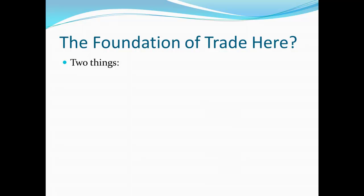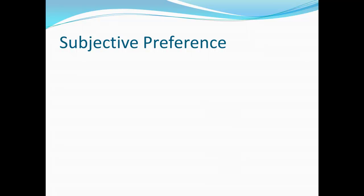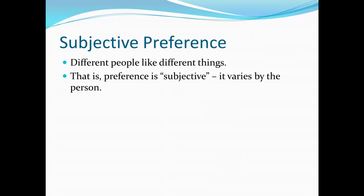There are really two things at work. The first is that there is a difference in preferences — Billy and Sally want different things. The second is that there is a difference in endowments, which is just a technical term for whatever someone happens to have. Preferences are subjective, meaning different people like different things, and this provides a foundation for differences in preferences — preferences vary by the person.